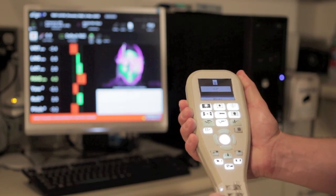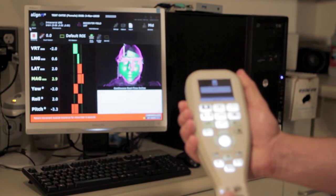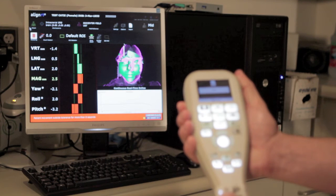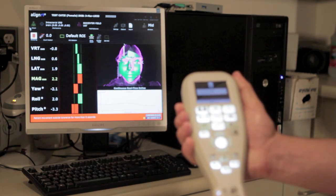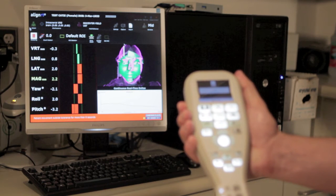we are ready to start using AlignRT, a real-time 3D surface tracking system that assists with patient setup and monitoring. AlignRT helps us align our patients to sub-millimeter accuracy and to verify that the patient stays in the correct position throughout the course of treatment.